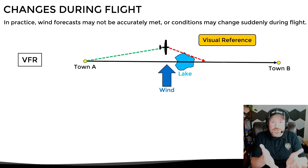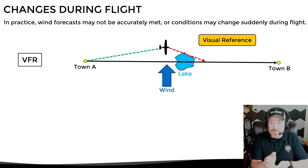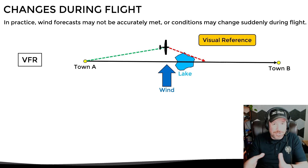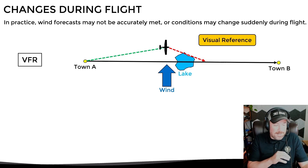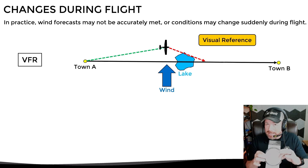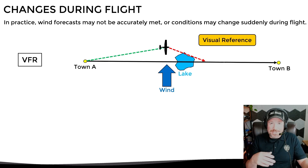At its core, the wind triangle is your track accounted for any crosswinds, sidewinds, or anything that kind of pushes you off course. We'll jump right into using, on the next lessons, the E6B calculators to talk through some of these calculations and how it all plays out.